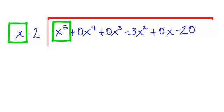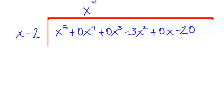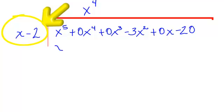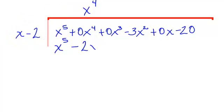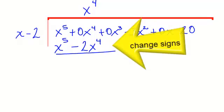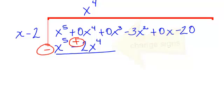How many times will x divide into x to the 5th? You are correct — x to the 4th. Take this and multiply it times your binomial x minus 2. So x to the 4th times x will be x to the 5th, and x to the 4th times negative 2 will be negative 2x to the 4th. Draw your line and we are going to subtract, which basically means we are changing the signs. x to the 5th and negative x to the 5th cancel. 0x to the 4th and positive 2x to the 4th will be 2x to the 4th. Bring down your next term.